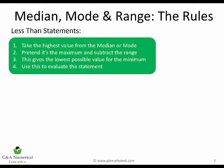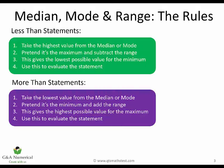To summarise: if you're dealing with a less than statement, take the highest value from the median or mode — don't care which one, just pick the highest. Pretend it's the maximum and subtract the range. This gives you the lowest possible value for the minimum. Use that value to evaluate the statement. For more than or greater than statements, reverse it: take the lowest value out of the median or mode, pretend it's the minimum, add the range. This gives the highest possible value for the maximum. Use that to evaluate the statement — and it's really as simple as that.